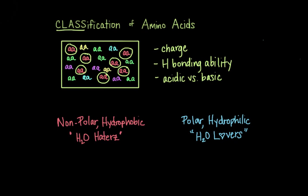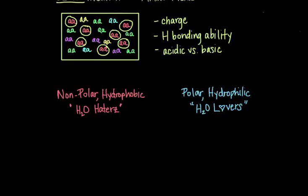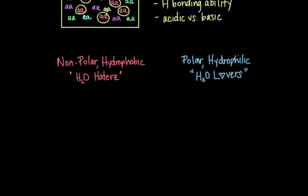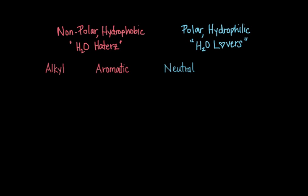Within the two groups of nonpolar hydrophobic and polar hydrophilic amino acids, you then have a further breakdown into subgroups. Those subgroups include amino acids that have alkyl side chains, aromatic side chains, neutral ones, acidic ones, or basic ones.